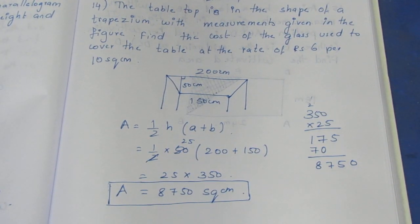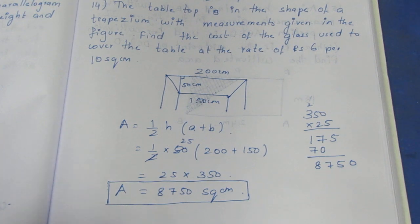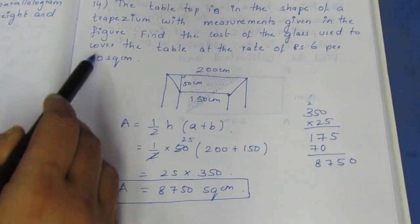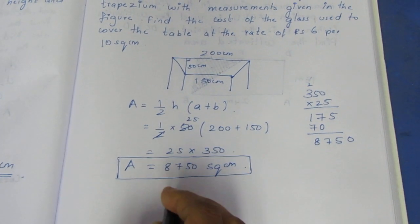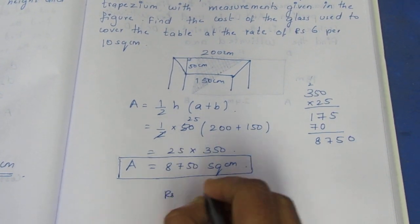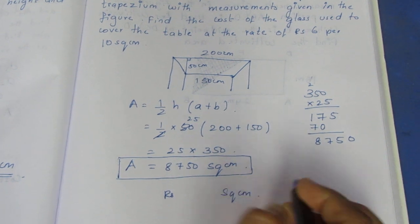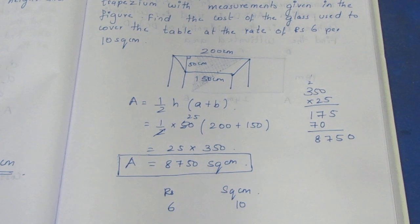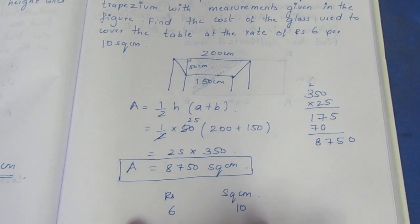The rate is Rs. 6 per 10 square cm. So if 10 square cm costs Rs. 6, then 1 square cm would be Rs. 6 divided by 10. This is how we set up the problem. Rs. 6 for 10 square cm.